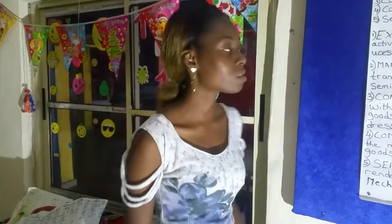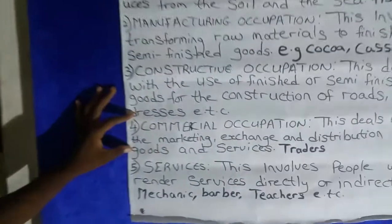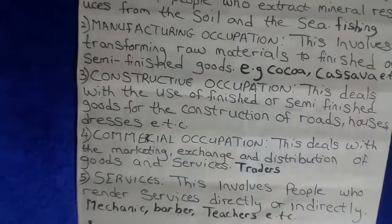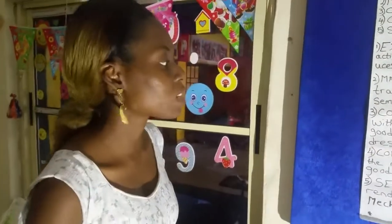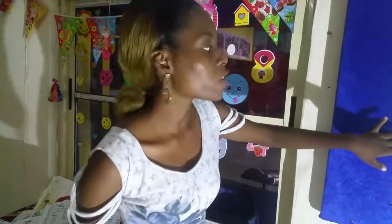Even the dresses you make — fabric starts as a raw material and is made into a dress or a trouser. That's constructive occupation. Now the next one is commercial occupation. After you finish extracting, manufacturing, and constructing, you don't keep it in your house — you have to sell it. The process of selling, buying, and distributing is called your commercial occupation. Traders carry your goods to the markets to go and sell — that's them involving in commercial occupation.